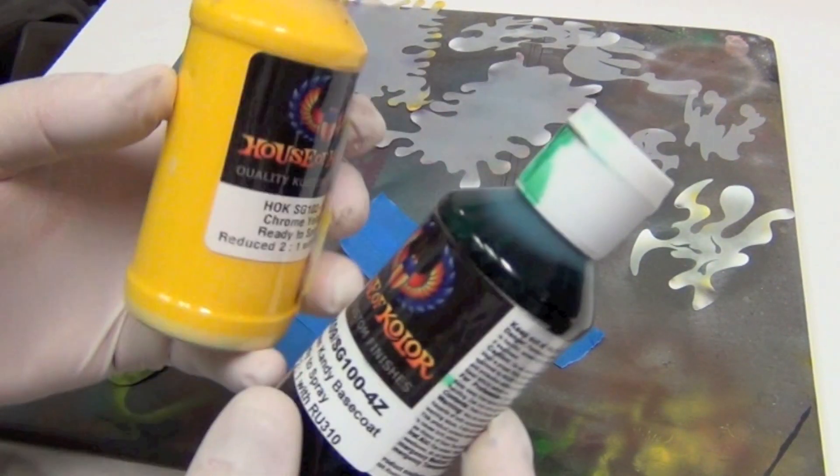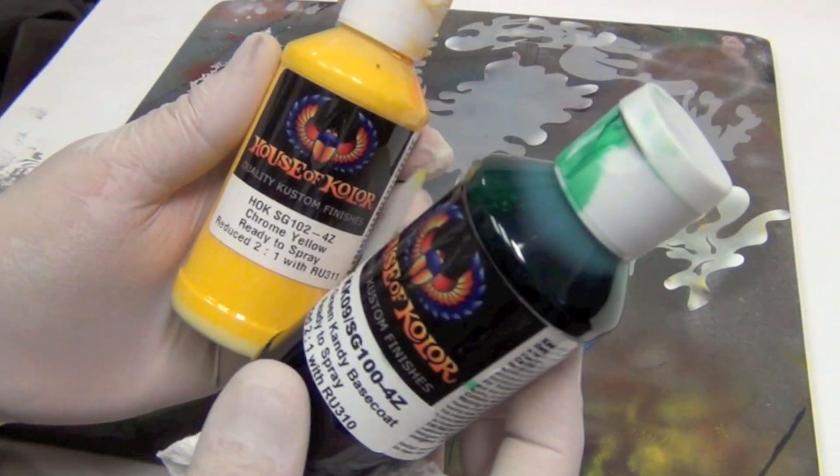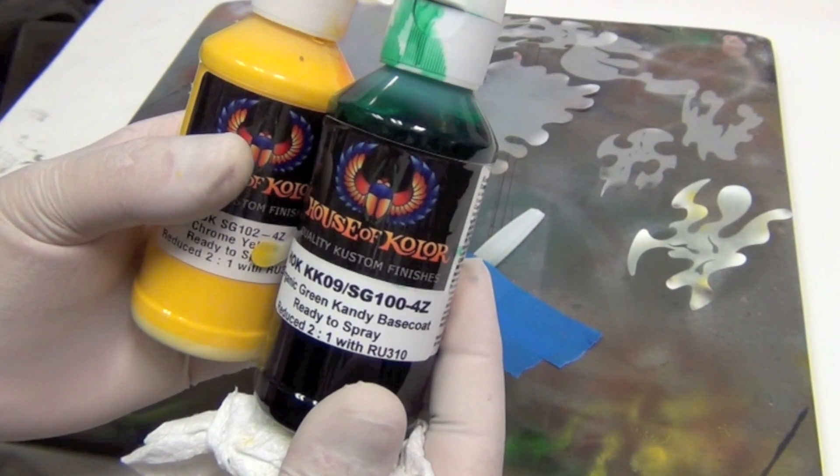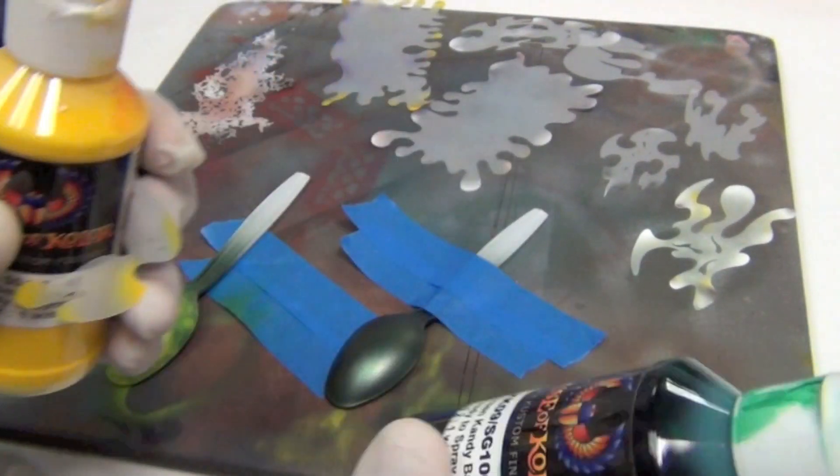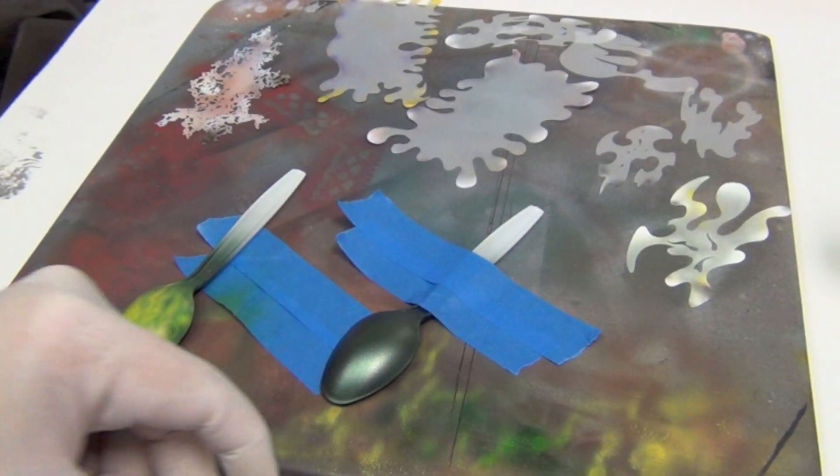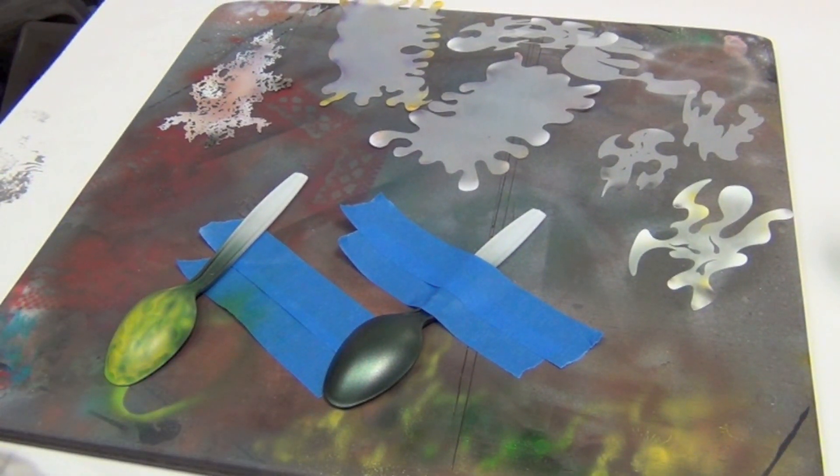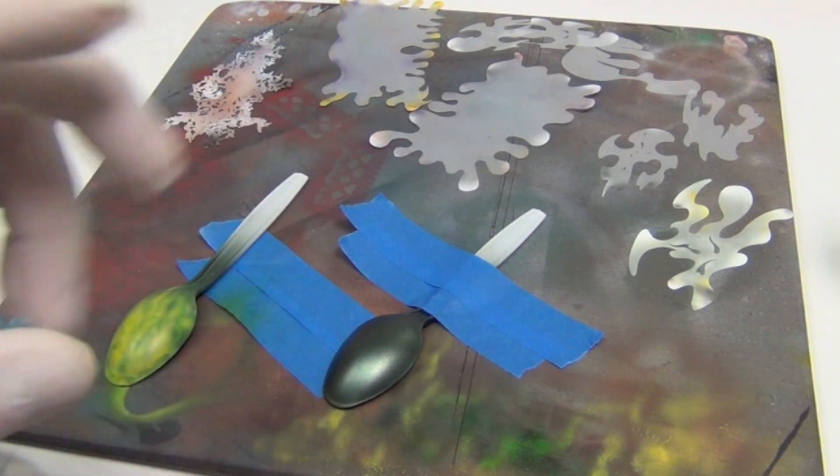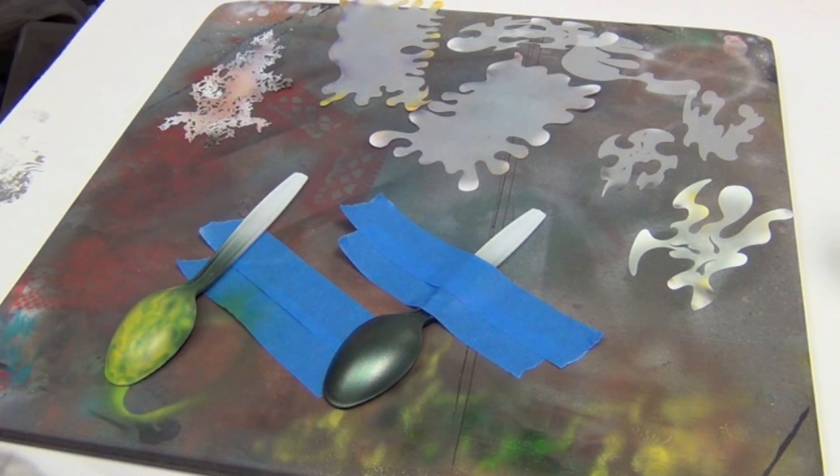I've got my supplies ready: the chrome yellow, and for right now this is all I'm gonna be using for this stage. Chrome yellow and then organic green candy base coat. They're already loaded in the airbrushes. The next step is I'm going to pause, set up, and then there'll be a voiceover.